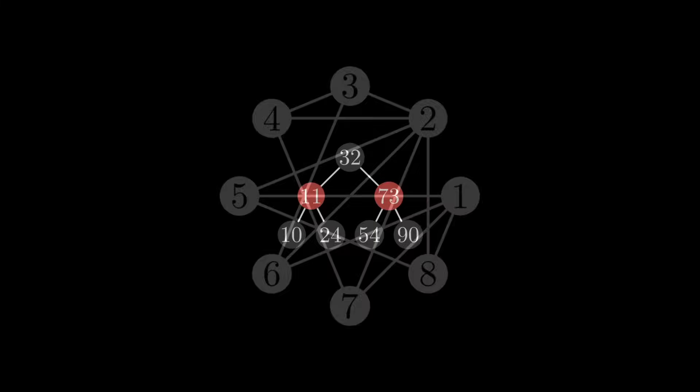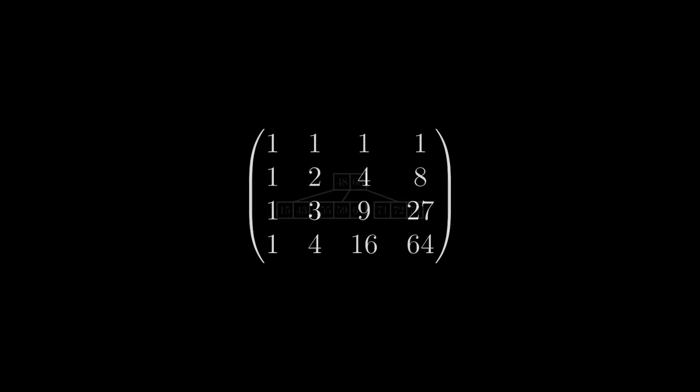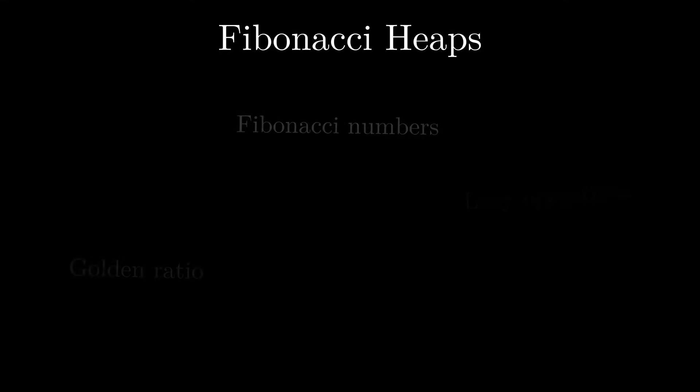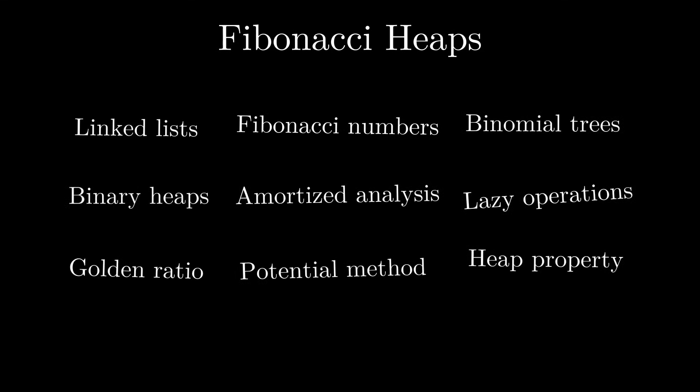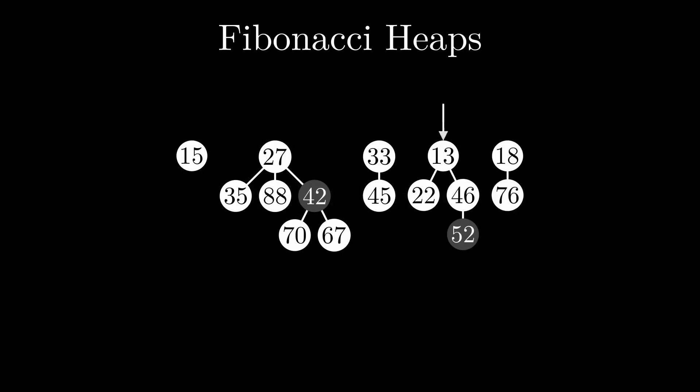Data structures have always been some of my favorite things in computer science. There is something really satisfying about turning a slow program into a fast one just by changing how you store your data. But there is one data structure I always found both fascinating and intimidating at the same time. When I learned about Fibonacci heaps, the first thing I thought was: how can anybody come up with that? A few seemingly unrelated ideas thrown together and suddenly you get a really efficient data structure. While Fibonacci heaps are certainly not the prettiest or most elegant data structure, they sure involve some really smart ideas that are worth appreciating.